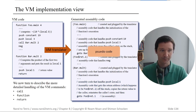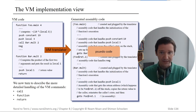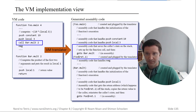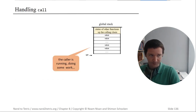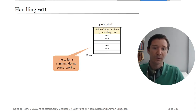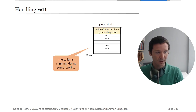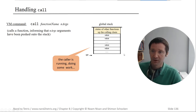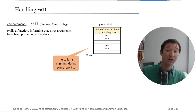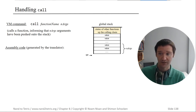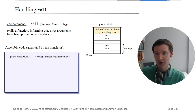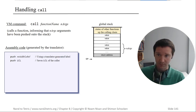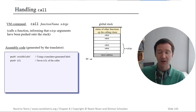Now let's look at the pseudocode in more detail, starting with the call command. The caller is doing work and at some point calls a function. Looking at the stack, we have all the caller's values and the stack pointer pointing to empty space. The call command takes the function name and the number of arguments, which are already on the stack. The assembly code pushes the unique return label we generate onto the stack.